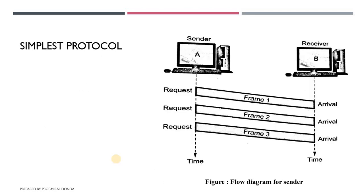The next is a flow diagram for the sender. The procedure at the sender side is constantly running — there is no action until there is a request from the network layer. Similarly, the procedure at the receiver side is constantly running but there is no action until a notification from the physical layer arrives. It is like a PC that is constantly running and reacts only when it gets a message, otherwise remaining in an idle state.